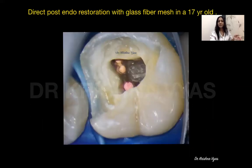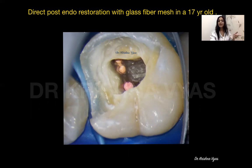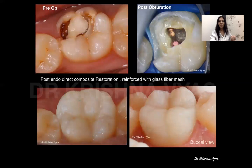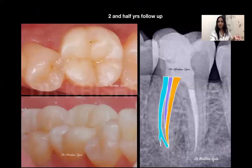Here is a case where two walls were missing. I did not want to do post and core for three reasons: the patient is just 17 years old, occlusal loads were minimal to moderate, and there were three canals in the mesial root, so unnecessary preparation would weaken the root structure. On the distal side, placing a post would require further crown surface preparation which I wanted to avoid. So we used biomimetic restoration with glass fiber mesh. Here you can see the six-month follow-up and the two-and-a-half-year follow-up. In future, I may opt for indirect partial coverage restoration like an overlay.